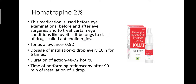Homatropine 2% is used before eye examination, before and after eye surgeries, and to treat conditions such as uveitis, which is an inflammatory condition of the uveal tract. It belongs to the anticholinergic class. The tonus allowance is 0.5 diopters, dosage is one drop every 10 minutes for six times, duration of action is 48 to 72 hours, and retinoscopy is performed 90 minutes after instillation.